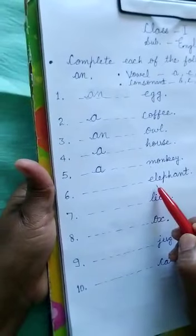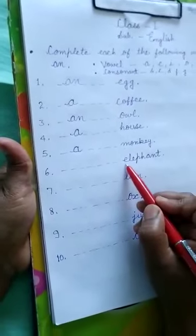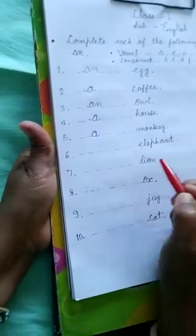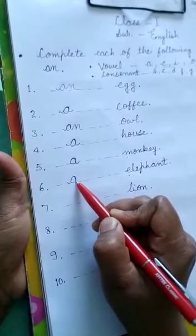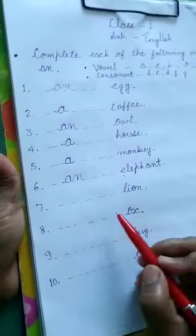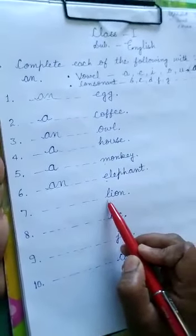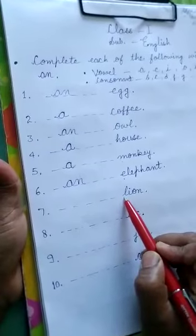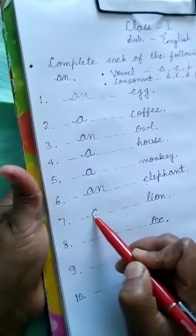Elephant. Elephant starts with E. E is a vowel, so we use AN. Next is lion. Lion starts with L. L is a consonant. What do we have to use? A. Consonant — what do we write? A.